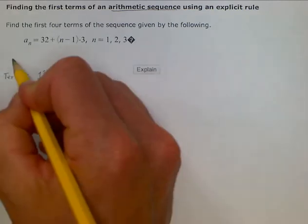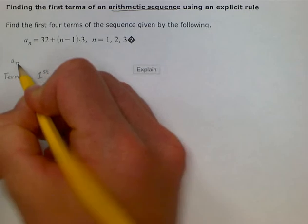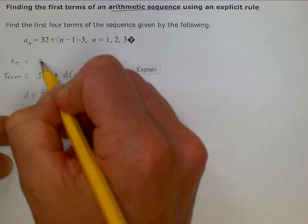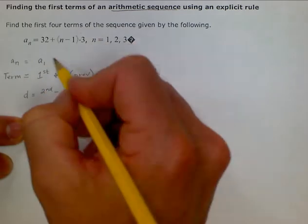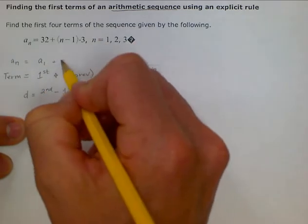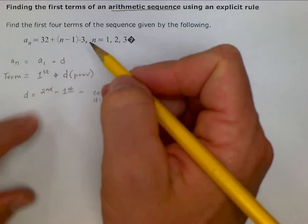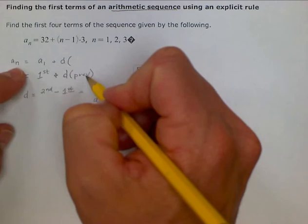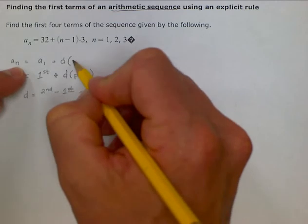Term a sub n is going to represent our term. Our first term is going to be represented by a sub 1, and then we would add our common difference, which we could find by taking the second minus the first, and then the previous term is going to be 1 before n, or n minus 1.